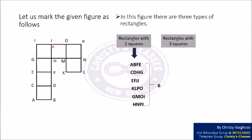Next, we are going to find the number of rectangles with 3 squares. And the first one is ABHG. Second is CDJI. Next is GNPI. So there are a total of 3 rectangles with 3 squares.